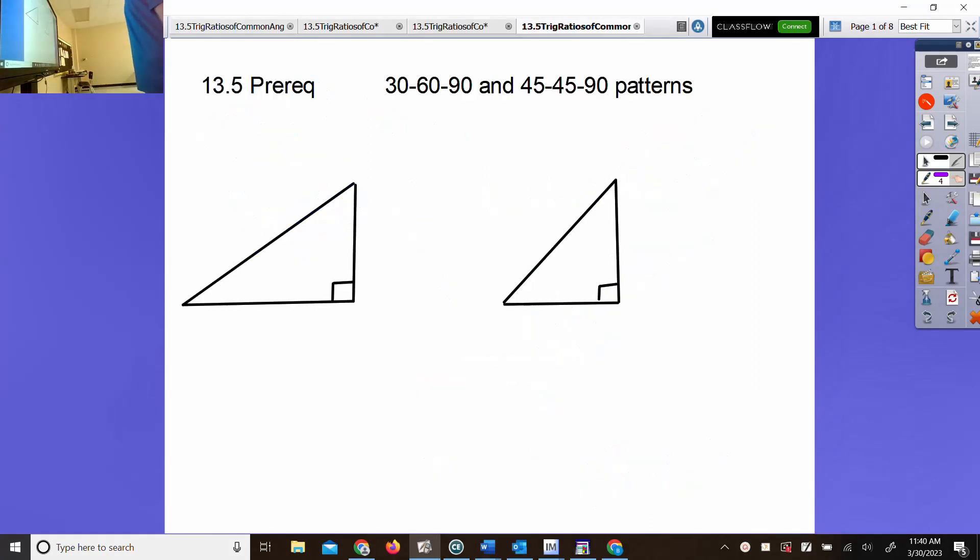Trigonometric ratios of common angles. One of the things we did yesterday was the 30-60-90 pattern, and I talked about a set of numbers. What was the set of numbers on 30-60-90 theorem? It's the first three numbers: one, two, root three. You write down the first three numbers like a clock.